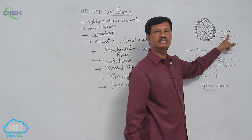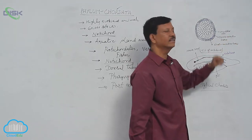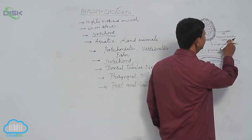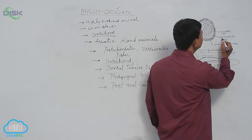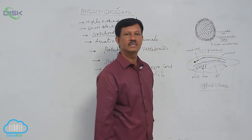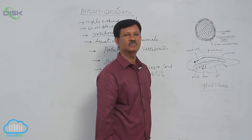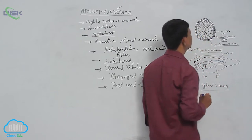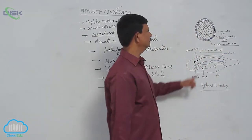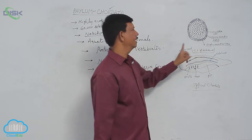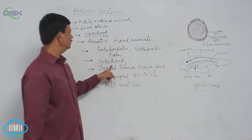A large number of vacuolated cells are present in the middle region. These cells are covered by thick connective tissue, which is known as fibrous connective tissue. It is present on the inner side. On the outer side, thin elastic connective tissue is present. This is the internal structure of the notochord.